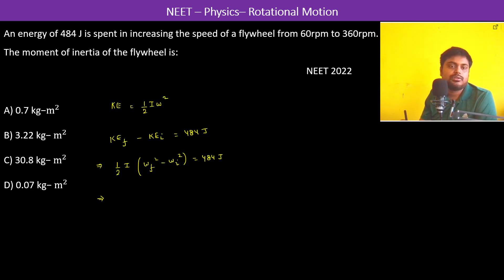So omega is 60 rpm. We have half into I, omega final which is 360, so 360 revolutions, that means 2π radians per minute which is 60 seconds, this square, minus